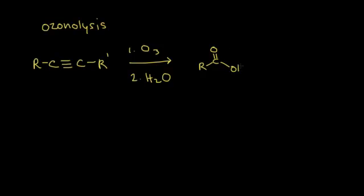Let's draw those two carboxylic acids and point out where everything comes from. Here's one carboxylic acid, and here is the carboxylic acid resulting from the right side — with R prime. This carbon is bonded to an R group, giving one carboxylic acid, and this carbon is bonded to R prime, giving the other. You cleave and break your triple bond to create two separate molecules, giving us carboxylic acids from this reaction.